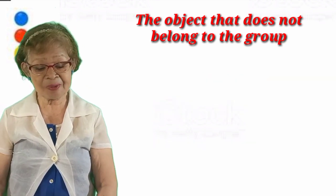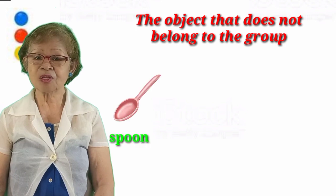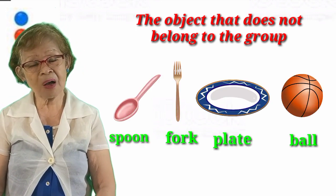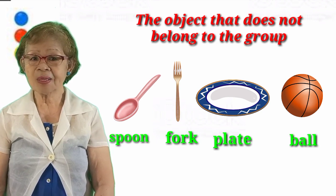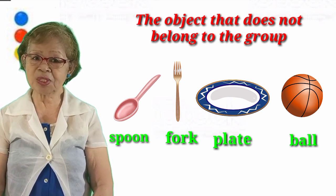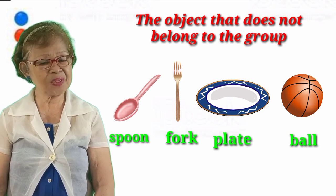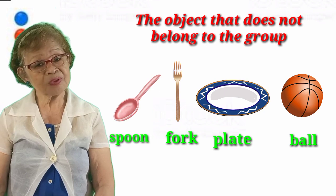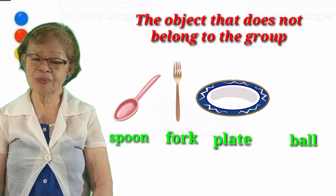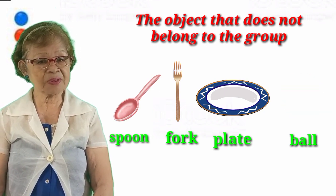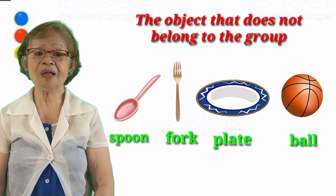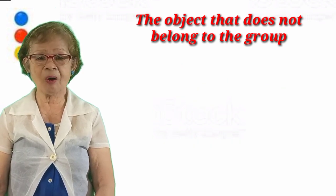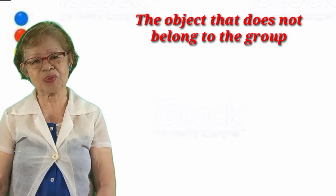One more example again. We have spoon, fork, and plate, but we have a ball — one object that does not belong to the group. It is the ball, because the spoon, the fork, and the plate are in one group, but the ball does not belong to the group. So we finish our object that does not belong to the group.